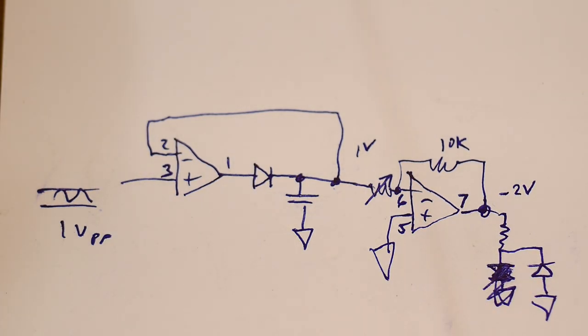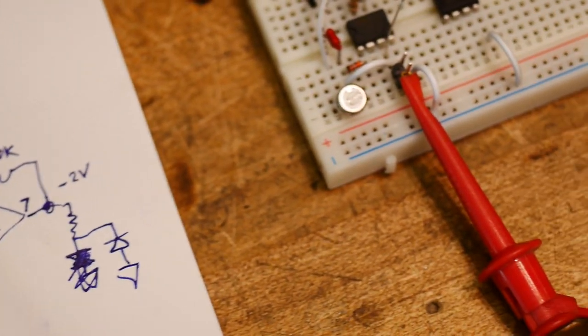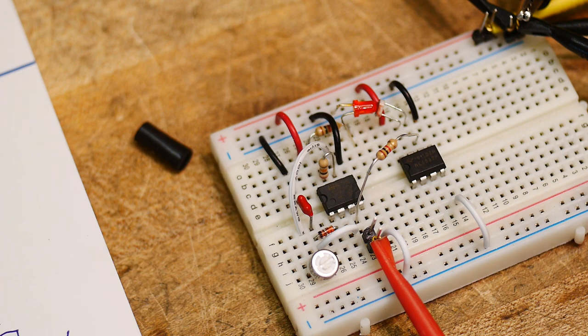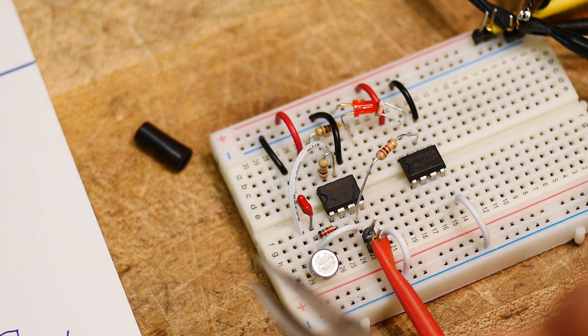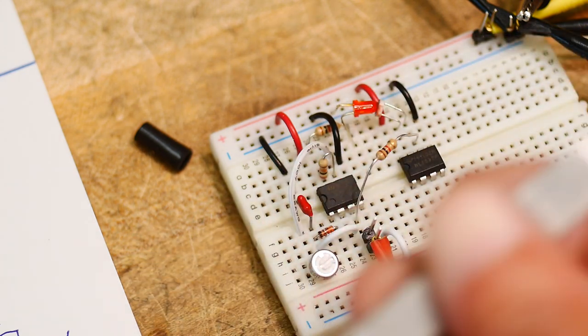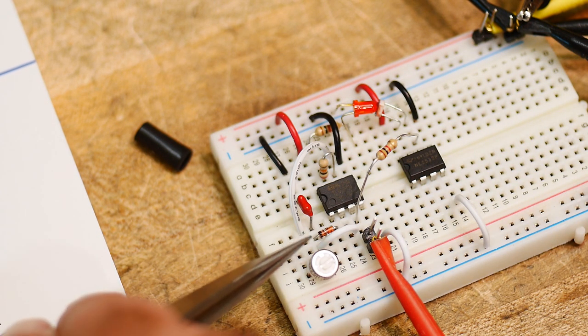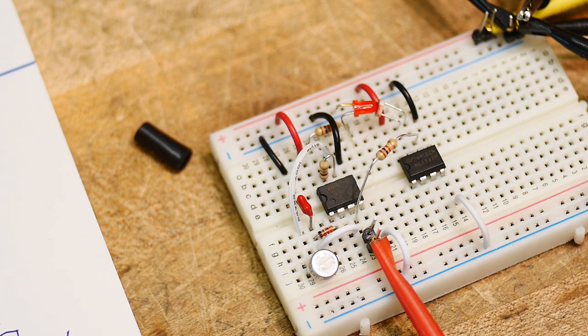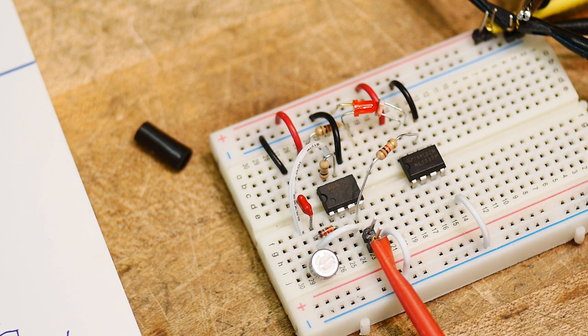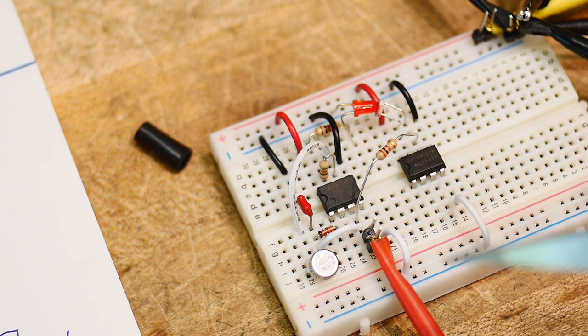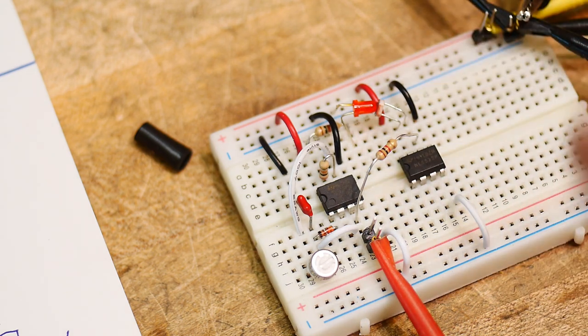Here's the circuit wired up. This is a dual op amp, so this is the peak detector with the little diode here and the capacitor. Then the other side of it is the amplifier. Here's an LED at the top.